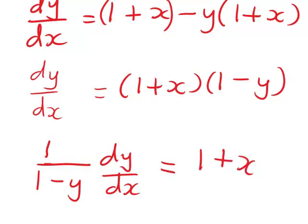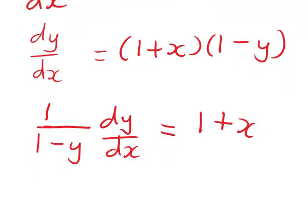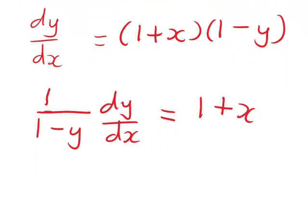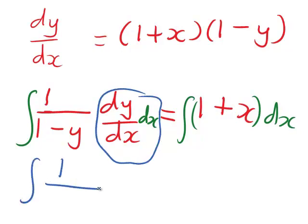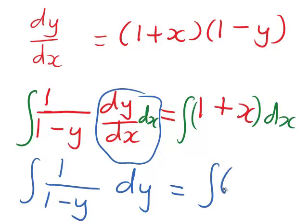From here, we are ready to integrate both sides. Effectively, we are integrating both sides with respect to x. What you'll notice is that dy/dx times dx reduces down to dy, so on the left-hand side we have the integral of 1 divided by (1 minus y) dy, and on the right-hand side the integral of (1 plus x) with respect to x.